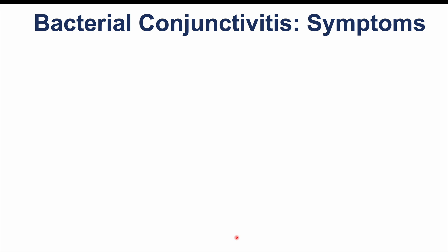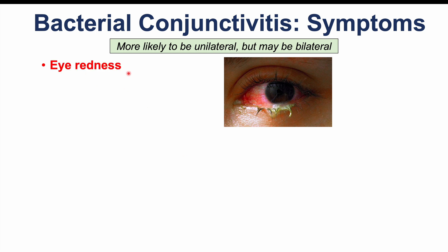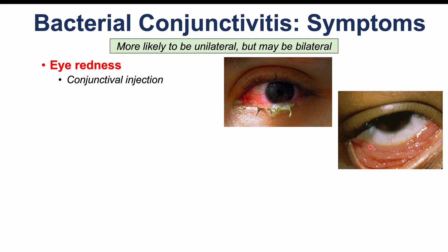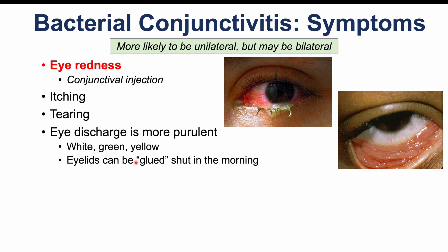Bacterial conjunctivitis is more likely to be unilateral, though it can be bilateral. We see eye redness and conjunctival injection. There can be some itching, though it is not a hallmark finding as it is in allergic conjunctivitis, and there may be some tearing. The key feature is purulent eye discharge — white, green, or yellow and pus-like. There can be so much discharge that when patients sleep and wake up in the morning, their eyelids become stuck or glued shut. This is a key finding in bacterial conjunctivitis.